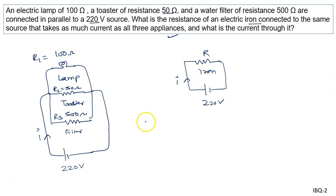So we will write 1 upon R equal to 1 upon R1 plus 1 upon R2 plus 1 upon R3.